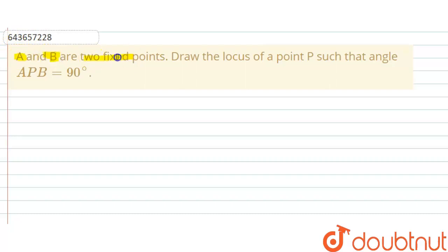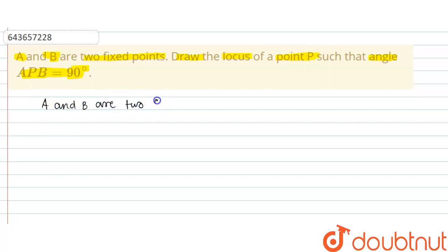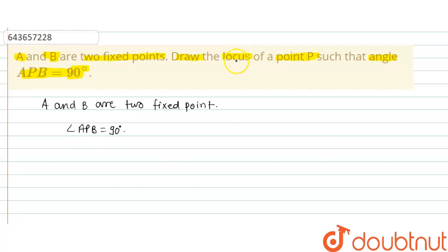In this question, it is given that A and B are two fixed points. We have to draw the locus of a point P such that angle APB is equal to 90 degrees. So here we have two points A and B which are fixed points. P is a point and we have to find the locus of point P such that angle APB equals 90 degrees. Locus is nothing but the path traced by point P.